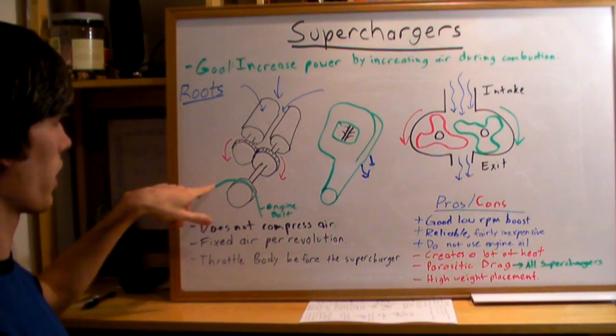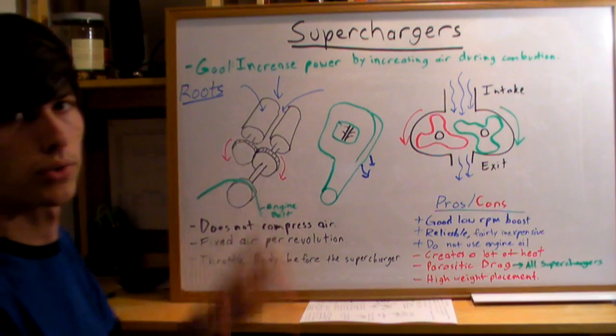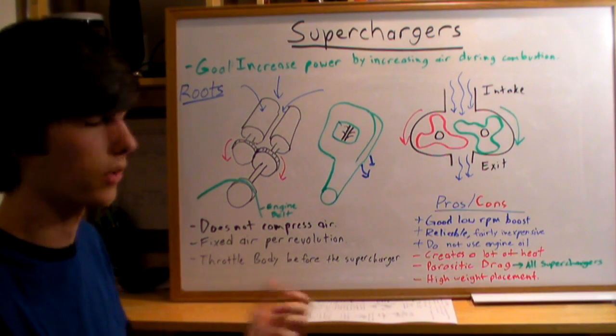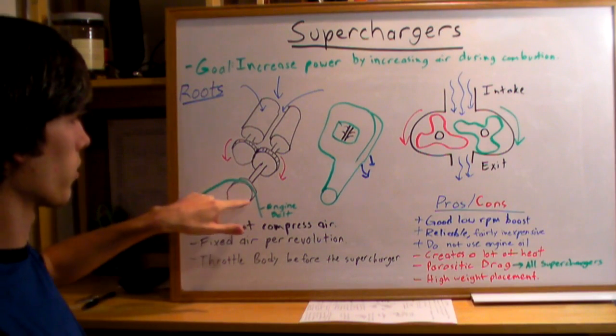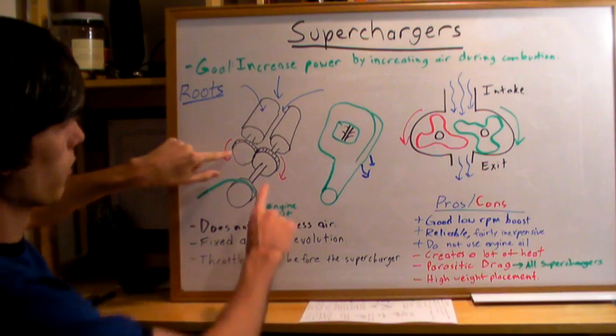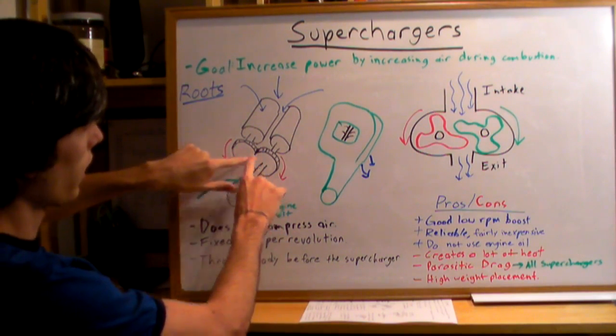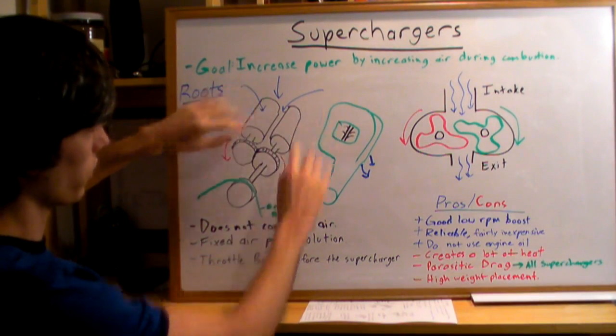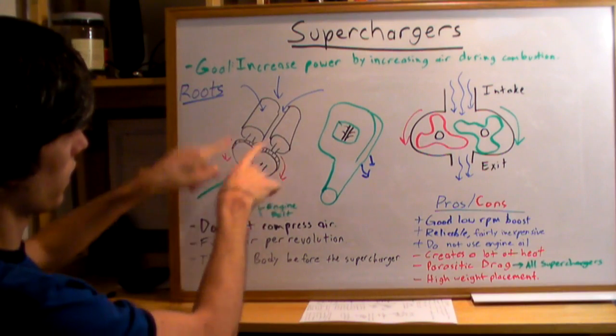What happens is you have an engine belt. All superchargers are powered by engine belts rather than turbochargers which use exhaust gases. An engine belt is going to rotate this shaft right here which is connected to two gears. These two gears are connected to these two cylinder-shaped objects that I've drawn which are going to rotate like this.